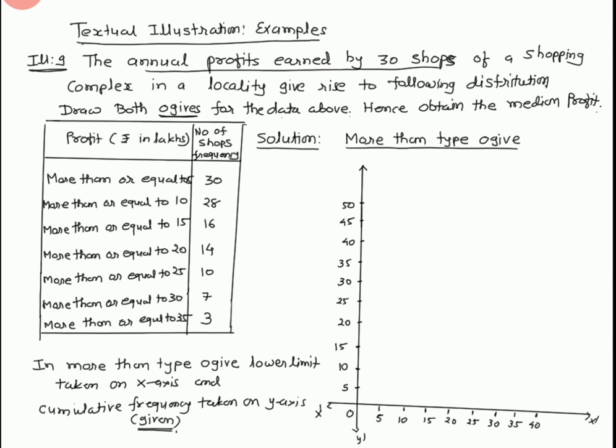We have two types of ogives. The question gives more than or equal to type data. More than or equal to 5: 30 shops. More than or equal to 10: 28 shops. More than or equal to 15: 16 shops. More than or equal to 20: 14. More than or equal to 25: 10. More than or equal to 30: 7. More than or equal to 35: 3.